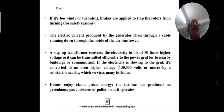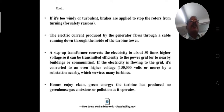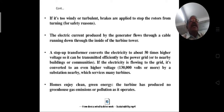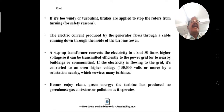If the wind is too strong or turbulent — for example during a cyclone — brakes are applied to stop the rotors from turning for safety reasons. The speed of the shaft is controlled by this brake system when wind is turbulent. The electric current produced by the generator flows through a cable running down through the inside of the turbine tower.